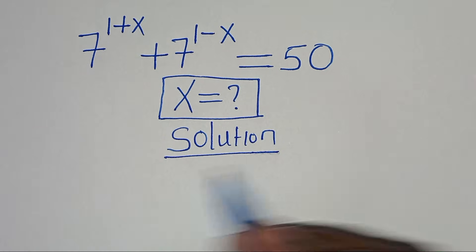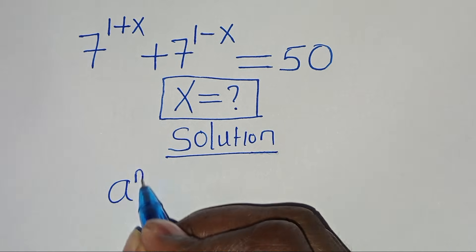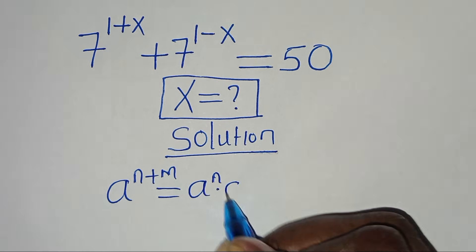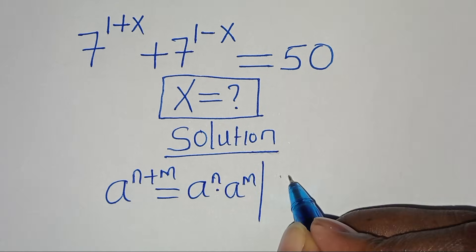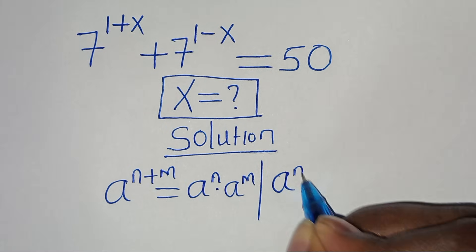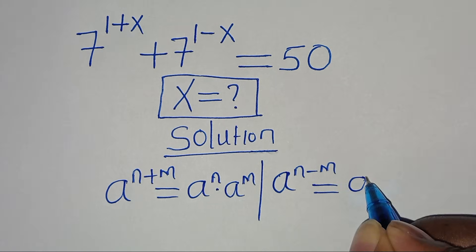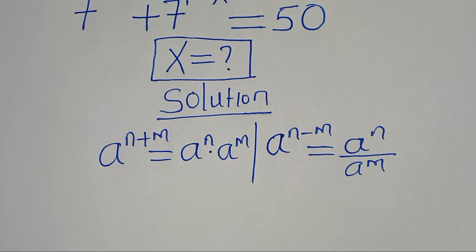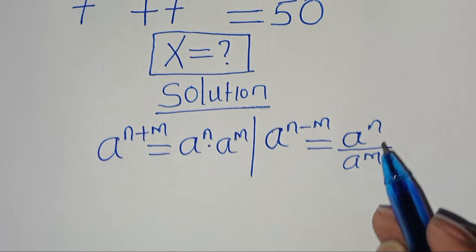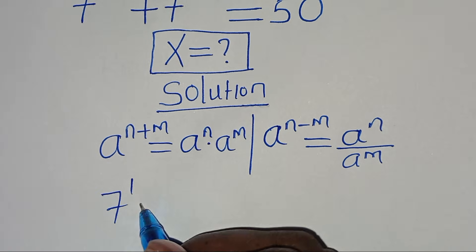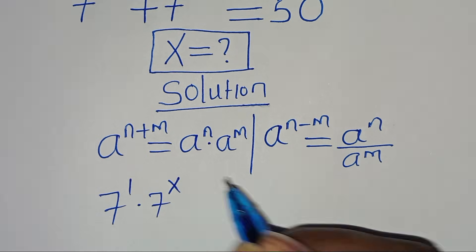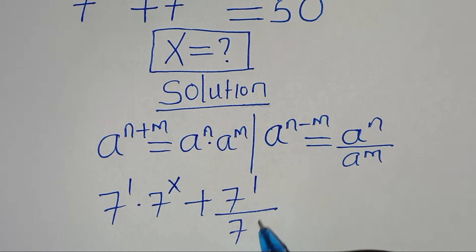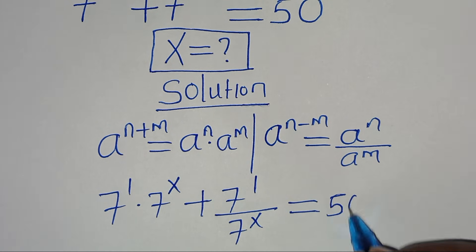This exponential equation is of the form a to the power of n plus m, which we can express as a to the power of n multiplied by a to the power of m. Also, this exponential equation is of the form a to the power of n minus m, which can be expressed as a to the power of n over a to the power of m. Applying these two exponent properties, we have 7 to the power of 1 times 7 to the power of x, plus 7 to the power of 1 divided by 7 to the power of x, equal to 50.